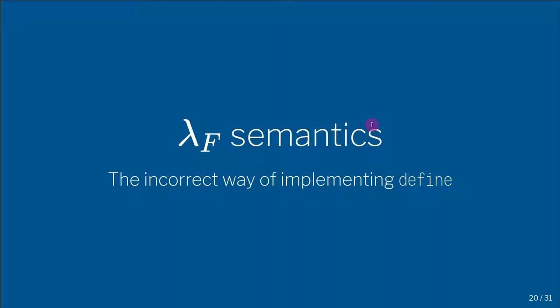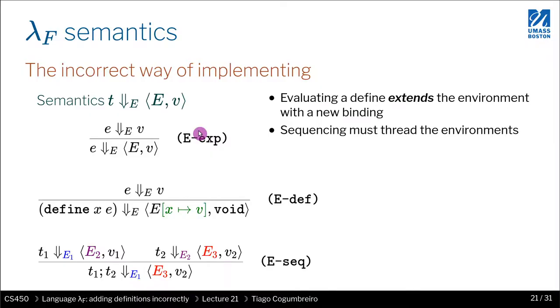Now I want to introduce the semantics, that is to say a specification of how we could implement the evaluation function of terms, which is basically the novelty here in lambda F. So we have a new formalism, right? We have a new function that is just for terms, and we're gonna have the old one that we had before for expressions.